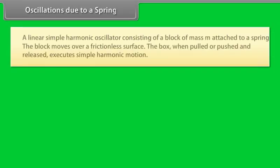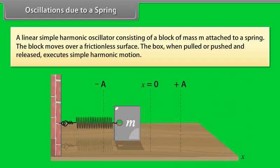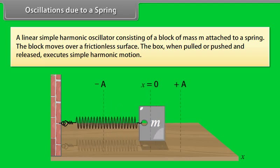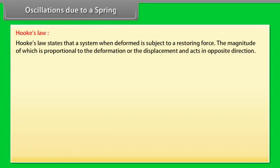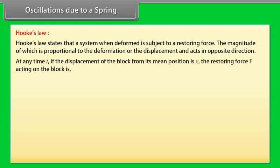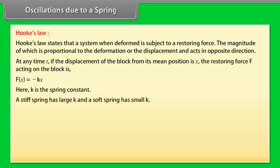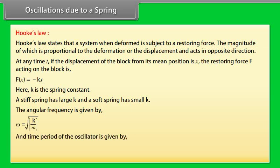Oscillations due to a spring: a linear simple harmonic oscillator consists of a block of mass m attached to a spring. The block moves over a frictionless surface. When pulled or pushed and released, it executes simple harmonic motion. Hooke's law states that a deformed system is subject to a restoring force proportional to the displacement and acting in the opposite direction. At any time t, if the displacement of the block from its mean position is x, the restoring force is F(x) = −kx, where k is the spring constant. The angular frequency is ω = √(k/m) and the time period is T = 2π√(m/k).